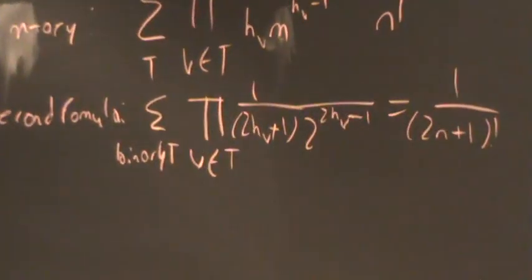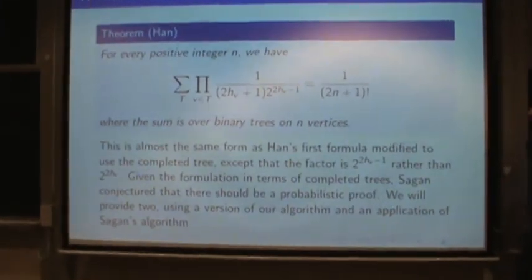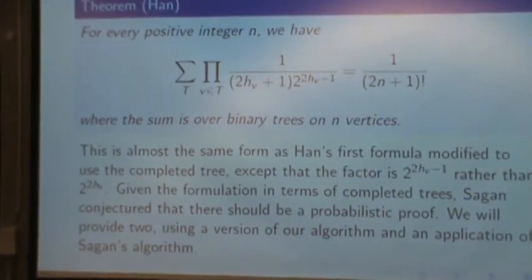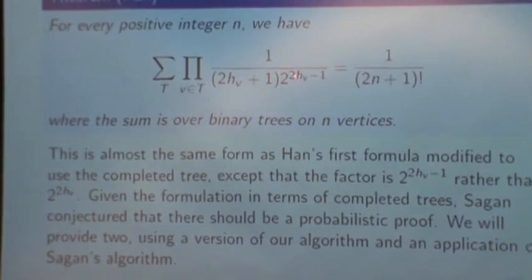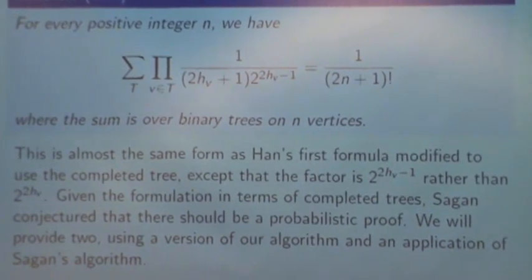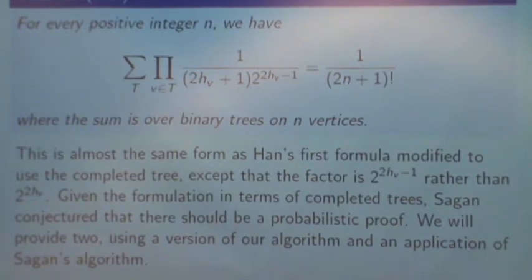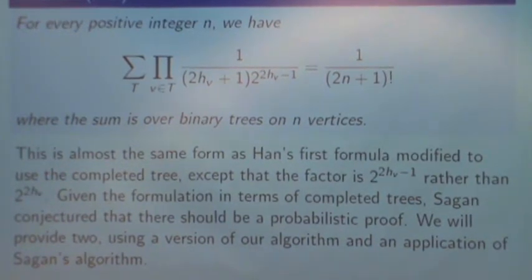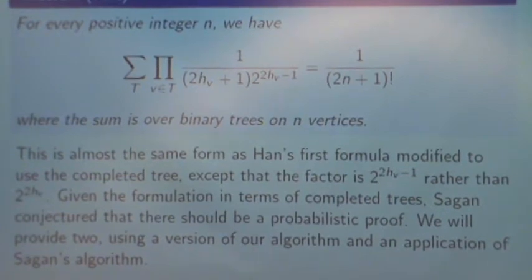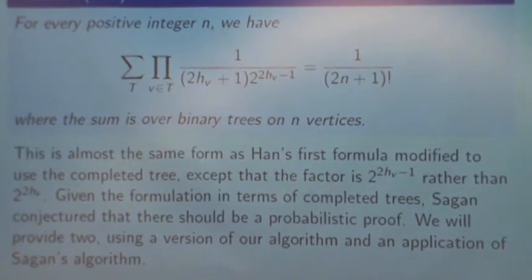Notice how very similar this looks to Han's first formula. If we do Han's first formula to use the completed tree, then this would be the same except that instead of 2 to the 2Hv minus 1, we'd expect 2 to the 2Hv here. And Sagan was the one who showed that this formula could be stated in terms of completed trees.